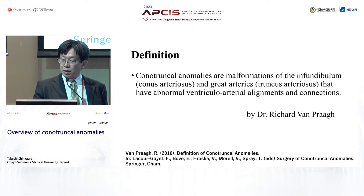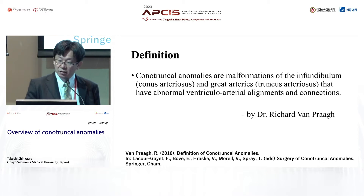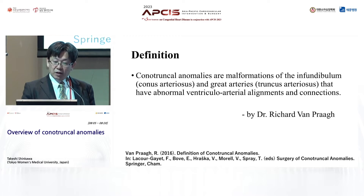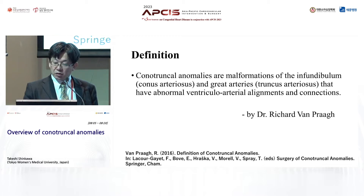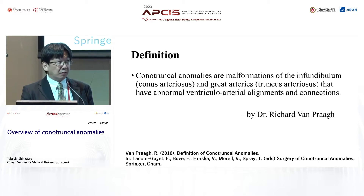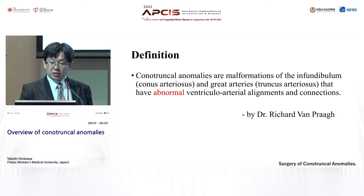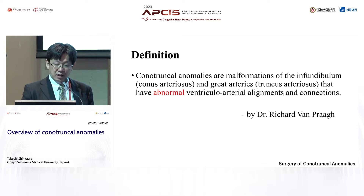So let's talk about what the conotruncal anomalies are. There can be multiple definitions depending on who you learned from. I picked up Dr. Richard Van Praagh's book published in 2016, and he describes that conotruncal anomalies are malformations of the infundibulum, which was conus arteriosus in the heart development process, and great arteries, which were truncus arteriosus, that have abnormal ventricular-arterial alignment and connections. In simple words, conotruncal anomalies are congenital heart disease with abnormal VA alignment and connections.